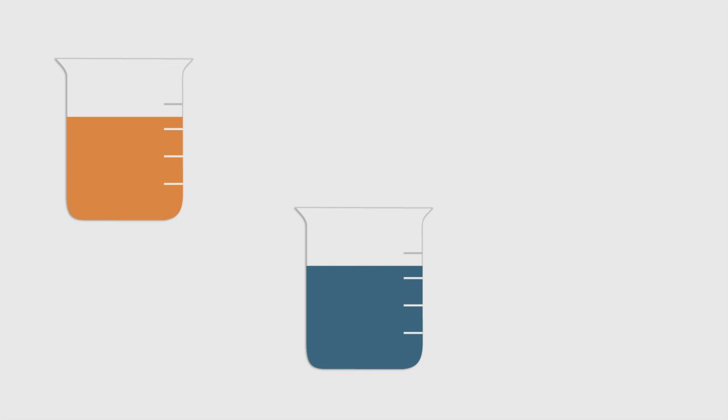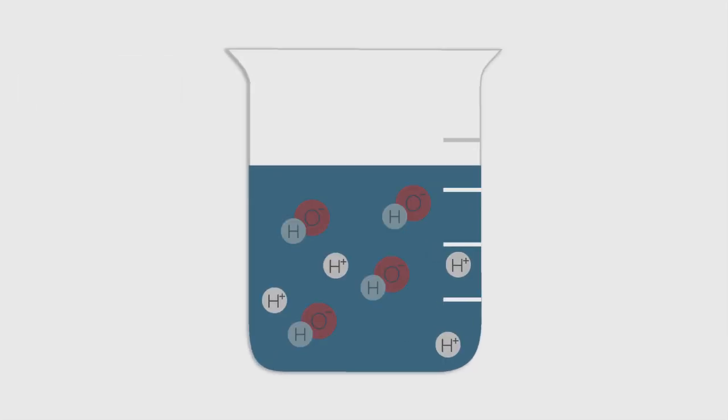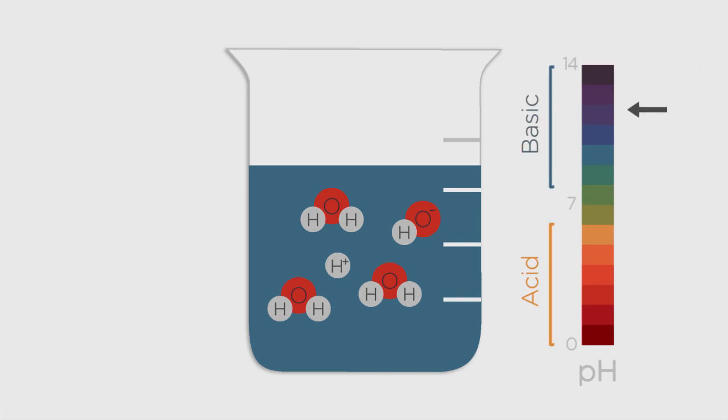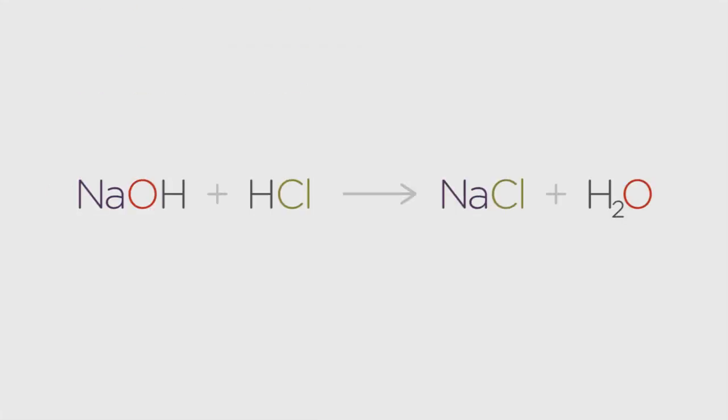They create neutral water molecules. As this happens, the number of free OH minus ions in the first beaker decreases, and so too will its pH, until it hits seven and the solution is neutral. Although there will still be tiny amounts of H plus and OH minus ions present in equilibrium. So here's the equation in full.